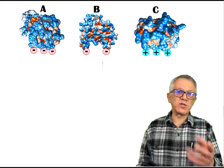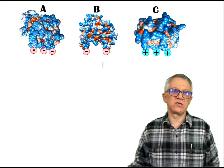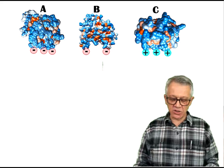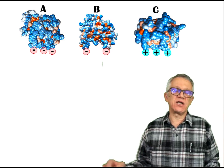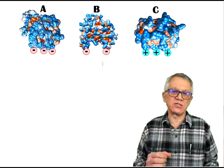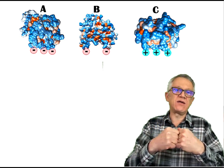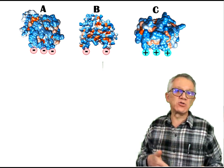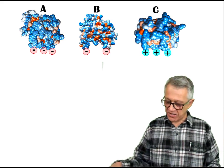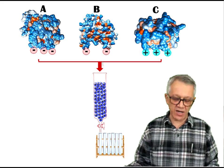Let's say we have three proteins A, B, and C. Two of them are negatively charged and one of them is positively charged, and you want to separate them. If your target is protein C, which is positively charged, you use a negatively charged stationary phase so that C binds while proteins A and B pass through. Protein A and B would be separated from protein C, which is your target. However, if your target is protein A or B, then we can have a different strategy.